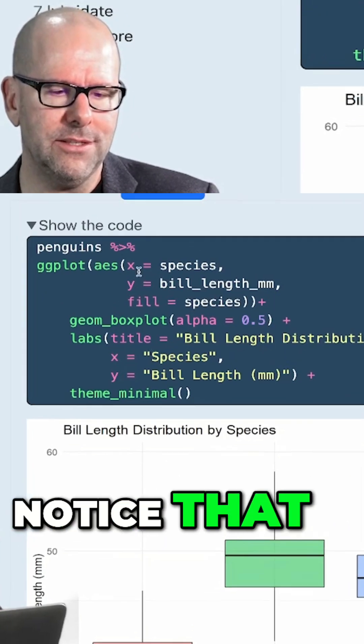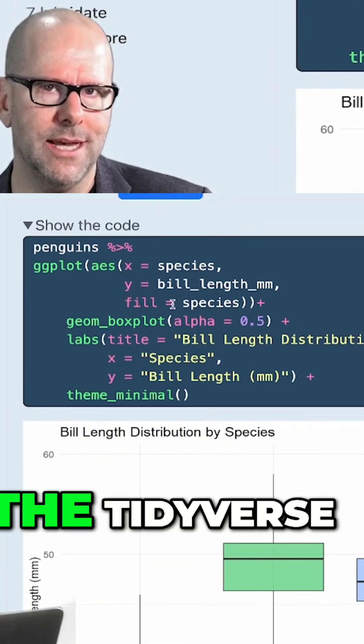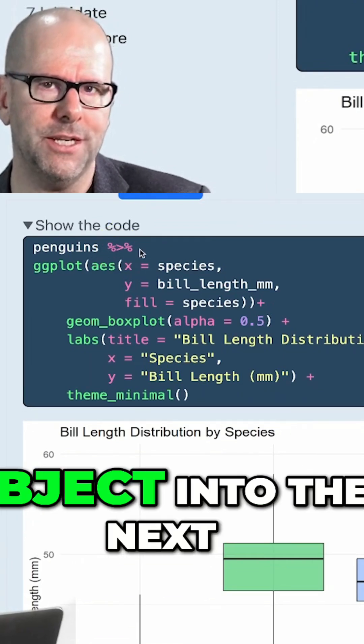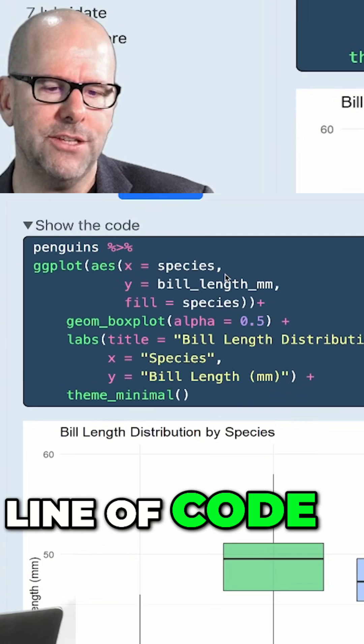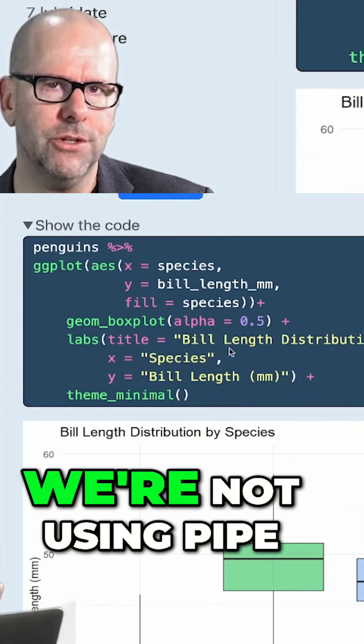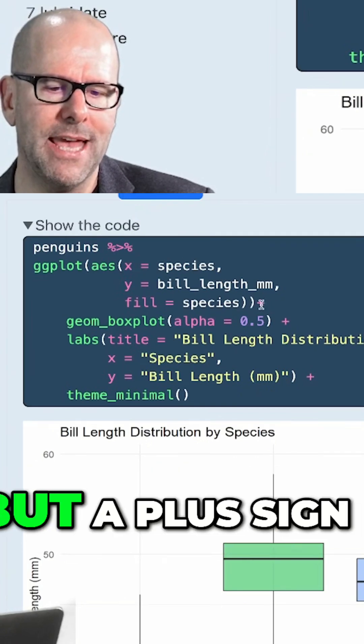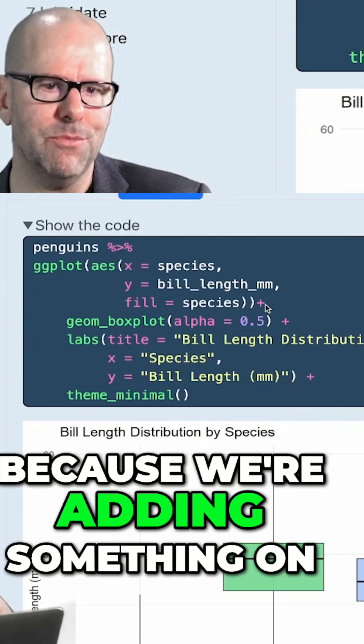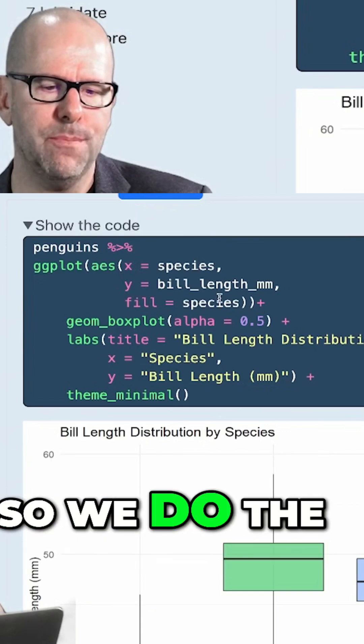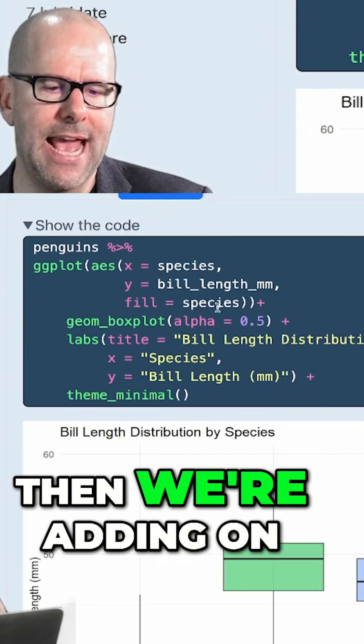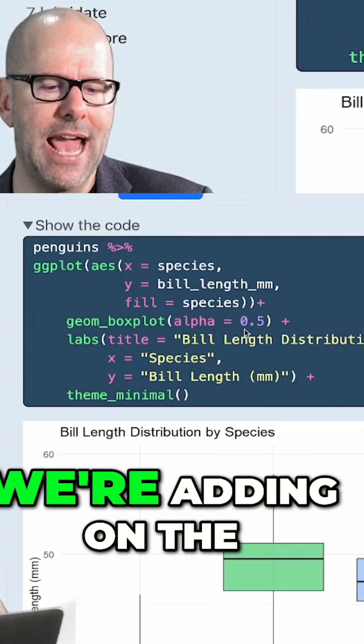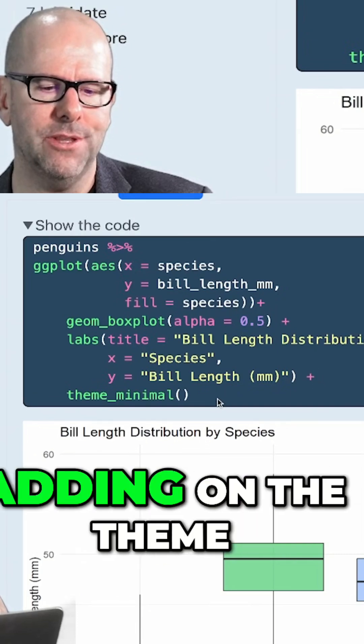Notice that this is also important. When we're working in the tidyverse, we use the pipe operator to pipe one object into the next line of code. As soon as we're inside ggplot, we're not using pipe operators anymore, but a plus sign, because we're adding something on. So we do the mapping of the aesthetics, then we're adding on the geometry, and then we're adding on the labels, and then we're adding on the theme.